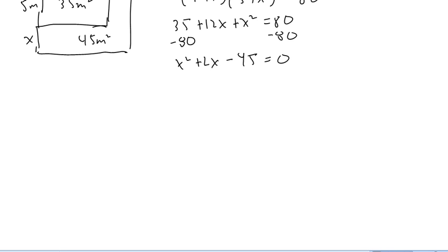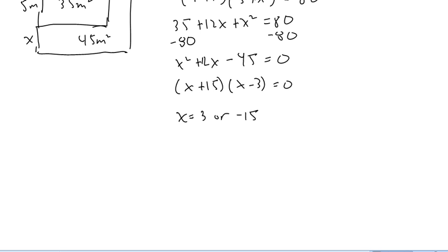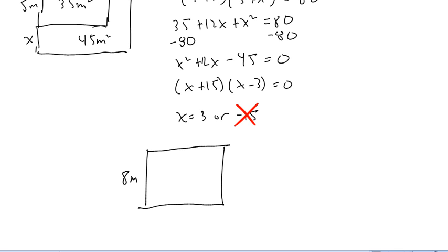I need two numbers that add to 12 and multiply to negative 45, giving x plus 15 times x minus 3 equals 0. So x equals 3 or x equals negative 15. Since the problem says increase, negative 15 makes no sense. Increasing by 3: 5 plus 3 is 8 meters and 7 plus 3 is 10 meters, giving 80 meters squared — which checks out. If possible, check in reality rather than just algebra.